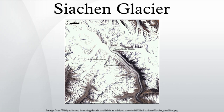Etymology: Siya in the Balti language refers to the rose family plant widely dispersed in the region. Chun references any object found in abundance. Thus the name Siachen refers to a land with an abundance of roses. The naming of the glacier itself, or at least its currency, is attributed to Tom Longstaff.